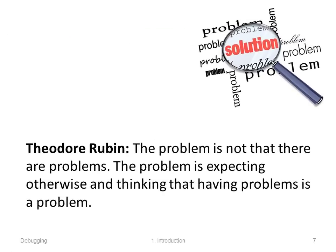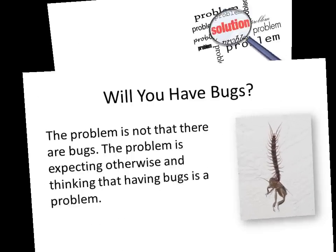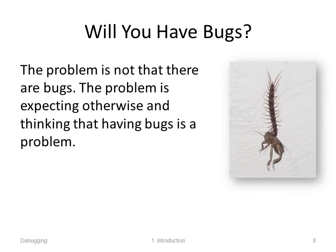So don't be ashamed of having bugs. Theodore Rubin said in another context, 'The problem is not that there are problems. The problem is expecting otherwise, and thinking that having problems is a problem.' Now if we replace the word 'problem' with 'bug': the problem is not that there are bugs; the problem is expecting otherwise, and thinking that having bugs is a problem. So yes, you will write code that has bugs in it. There is no need to be ashamed of it. There is no need to try to hide it. Everybody writes buggy code.